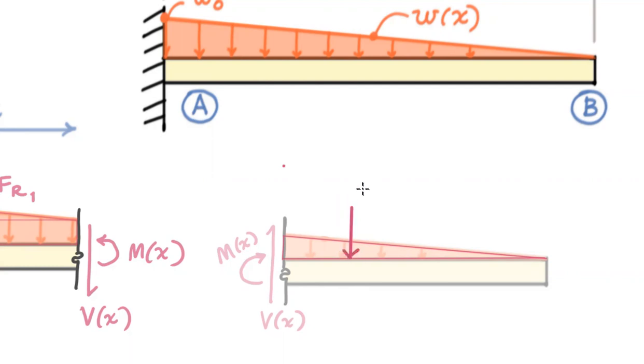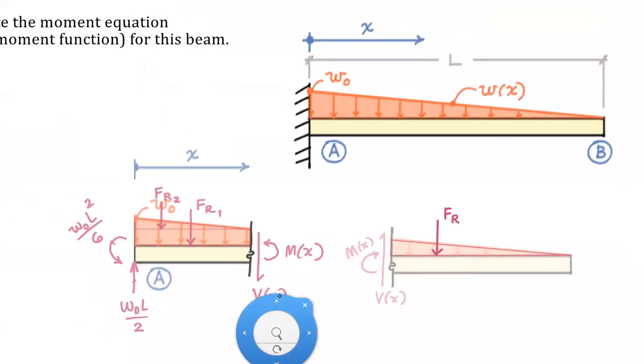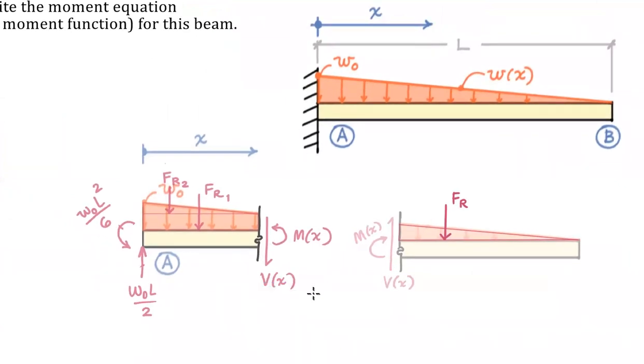So we've got just a triangle. That's going to make this one a little bit easier. So we've got a triangular distribution that looks like that. We'll need to figure out what the resultant force is. And we can replace that triangular load with its resultant force.